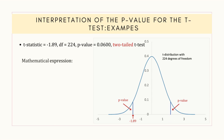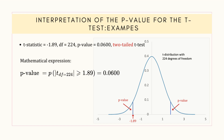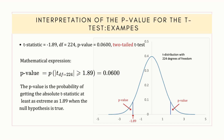Now, in this case, the p-value is the probability of getting the absolute value of the t-statistic at least as extreme as 1.89 when the null hypothesis is true.